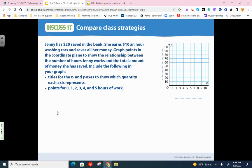So very similar question to our warm-up. We've got this person, Jenny, and she's got $20 saved in the bank. So she's starting with $20. She earns $10 an hour washing cars and saves all of her money. Graph points in the coordinate plane over here on the right to show the relationship between the number of hours Jenny works and the total amount of money she's saved. And include the following in your graph. You need titles for the X and Y axes. The numbers along the bottom, those are clearly the hours she works. So go ahead and write hours in there. And then over on the left-hand side, let's just call this money. So the Y axis is your money. The X axis is your hours.